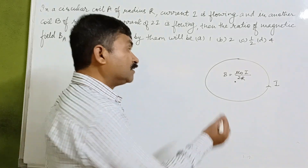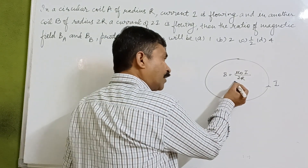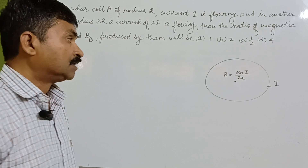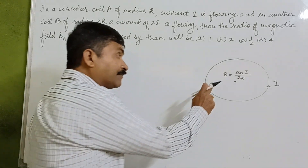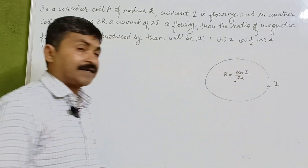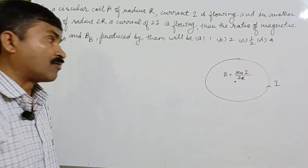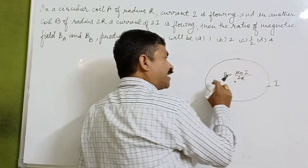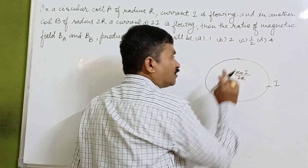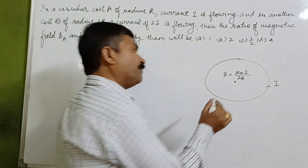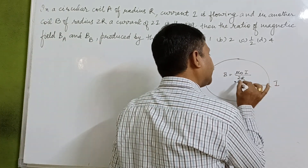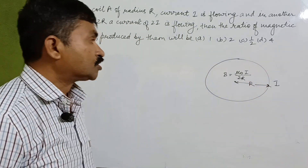You have to determine the magnetic field at the center of the coil. If a coil is carrying a current i, the magnetic field at its center is given by B = μ₀i / 2r, where r is the radius of the coil.